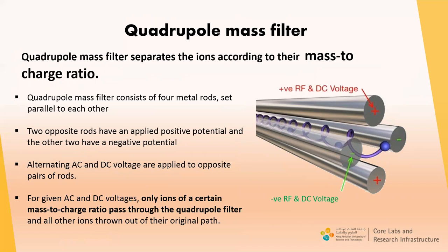The quadrupole mass filter is the heart of the ICP-MS spectrometer. It separates ions according to their mass-to-charge ratio and scans ions in mass sequence from low mass to high mass. The quadrupole mass filter consists of four metal rods set parallel to each other; two opposite rods have an applied positive potential and the other two a negative potential. Alternating and direct voltages are applied to opposite pairs of rods, so that for a given voltage setting, only ions of a certain mass-to-charge ratio pass through the filter while all other ions are thrown out of their original path.